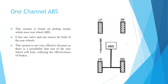Next is one-channel ABS. This system is found on pickup trucks which use rear-wheel ABS. It has one valve and one sensor for both rear wheels. This system is not very effective because there is a possibility that one of the rear wheels will lock up, reducing the effectiveness of the brakes. The front wheels have no speed sensor and no control valve; only the rear wheels have a speed sensor and one control valve connected to the ABS.